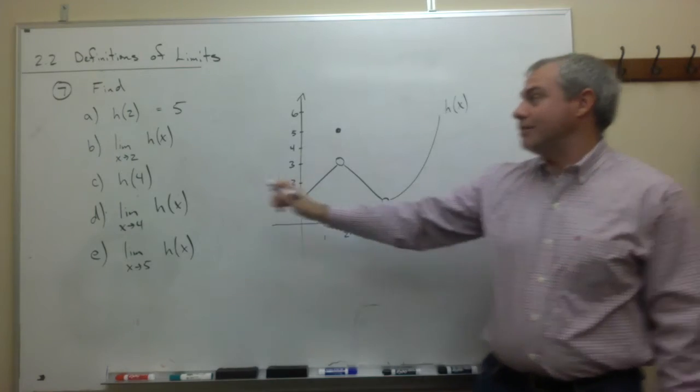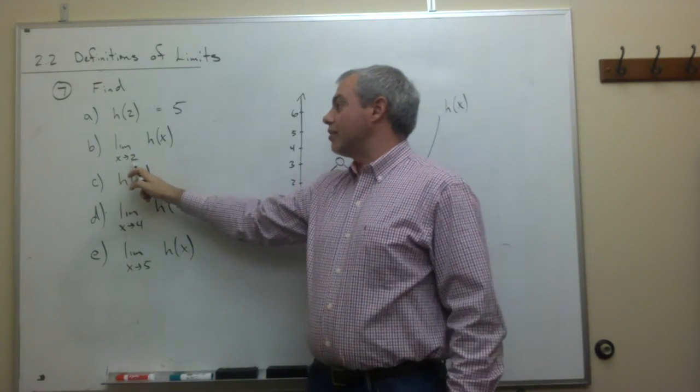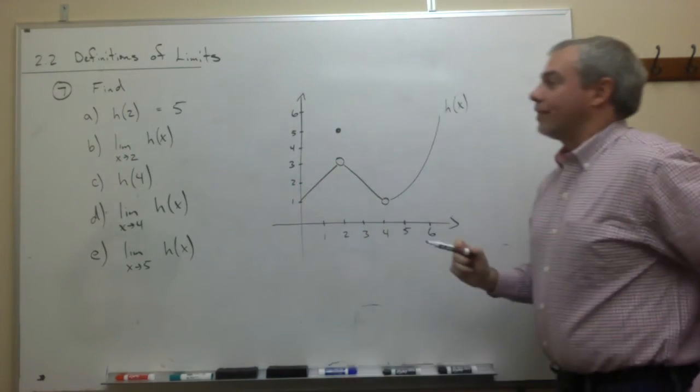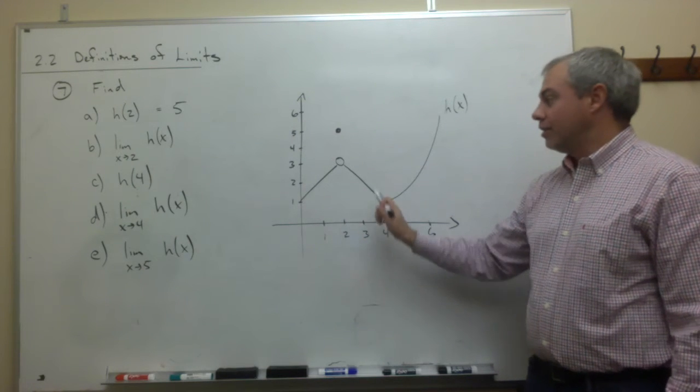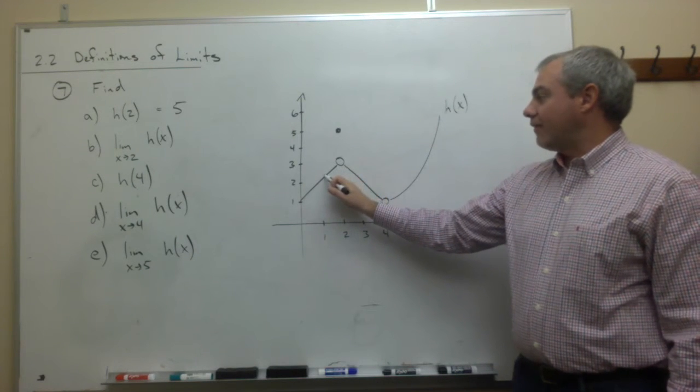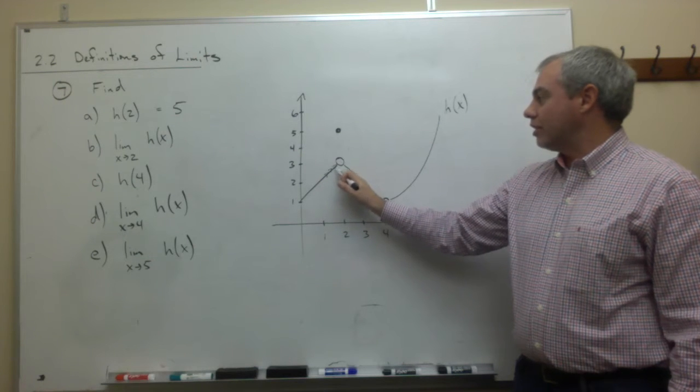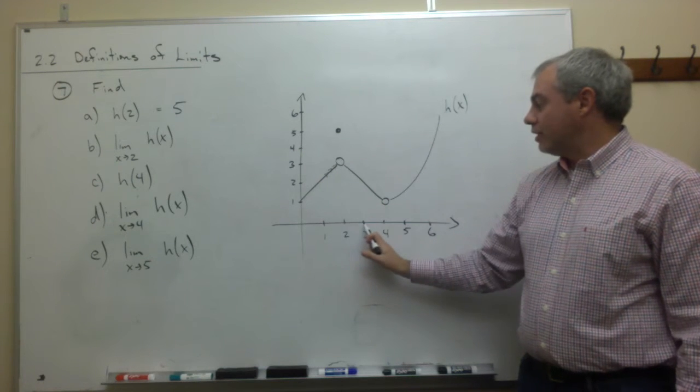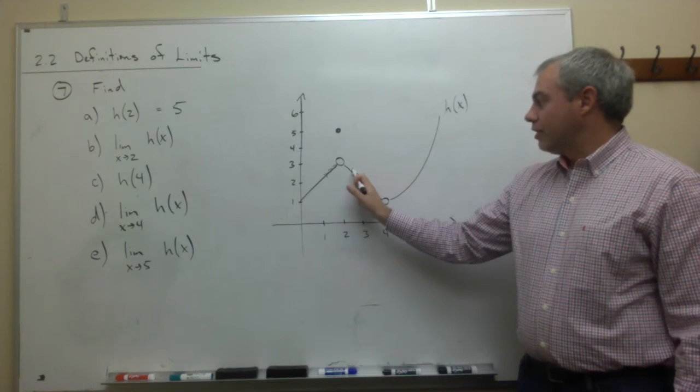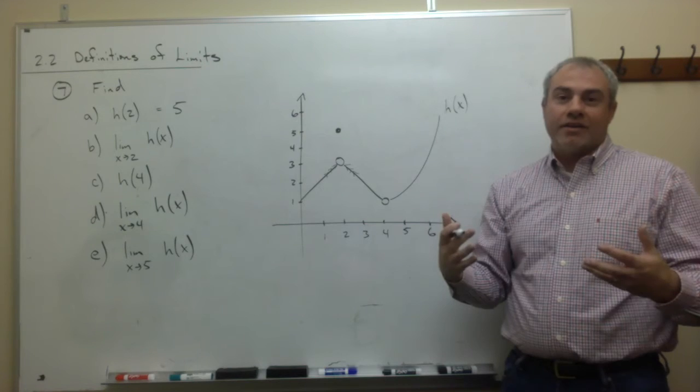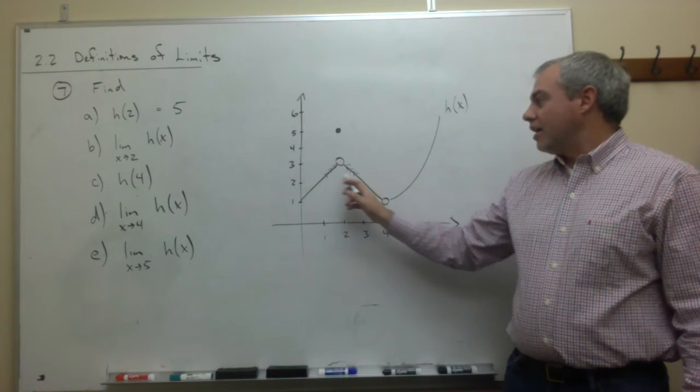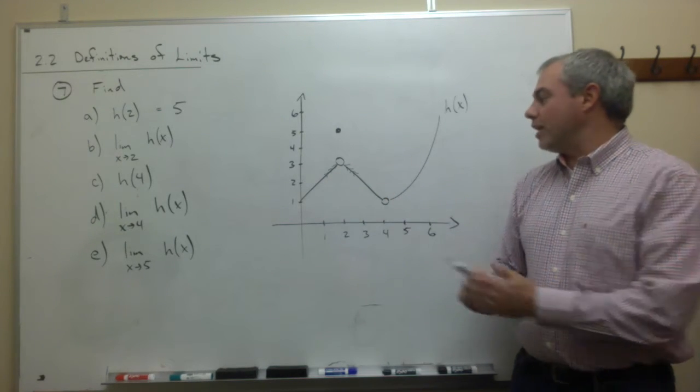What that's asking is, as I get close to 2 coming from the left, if I get closer and closer to this point 2, and if I get closer and closer to this point 2 from the right, does it kind of look like I'm going to hit something here? In other words, if you had no knowledge of what was happening at 2, what would you guess?